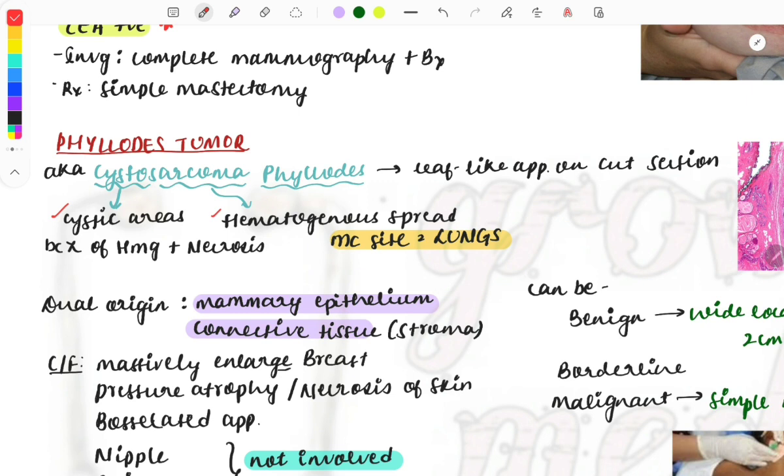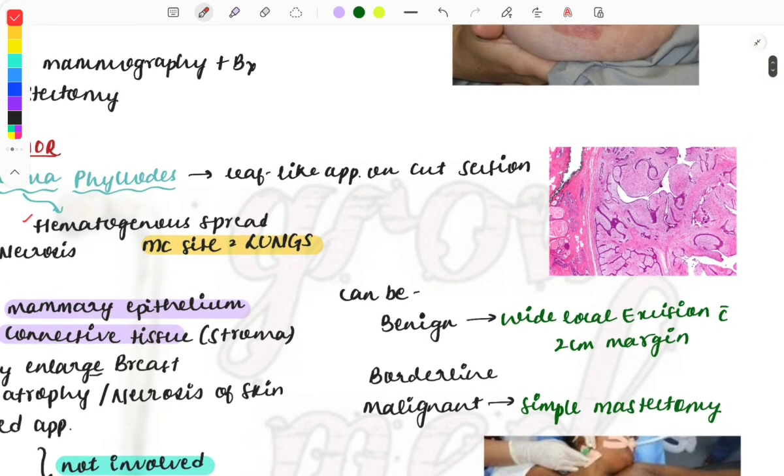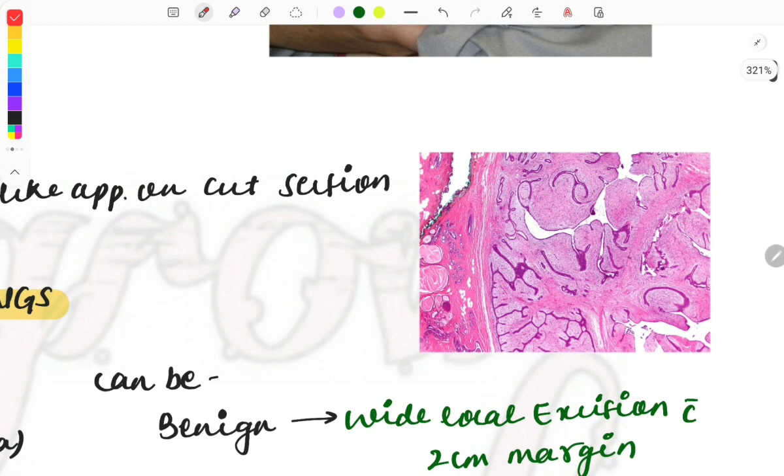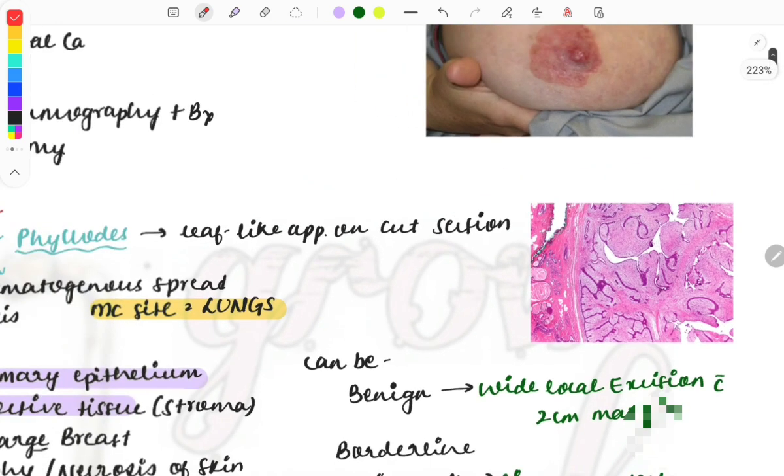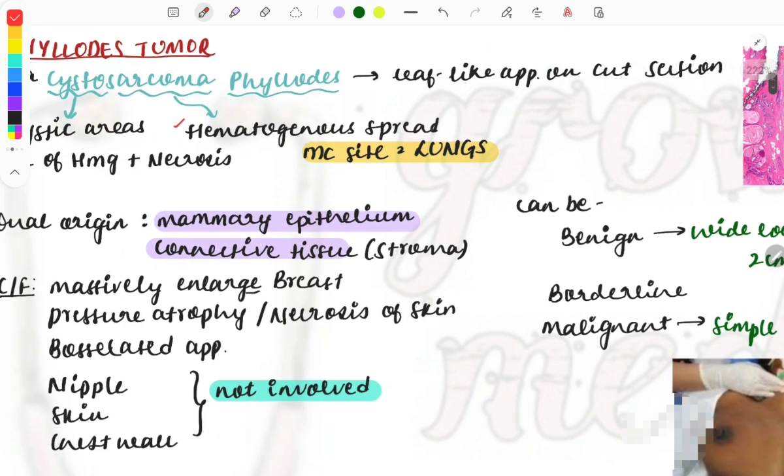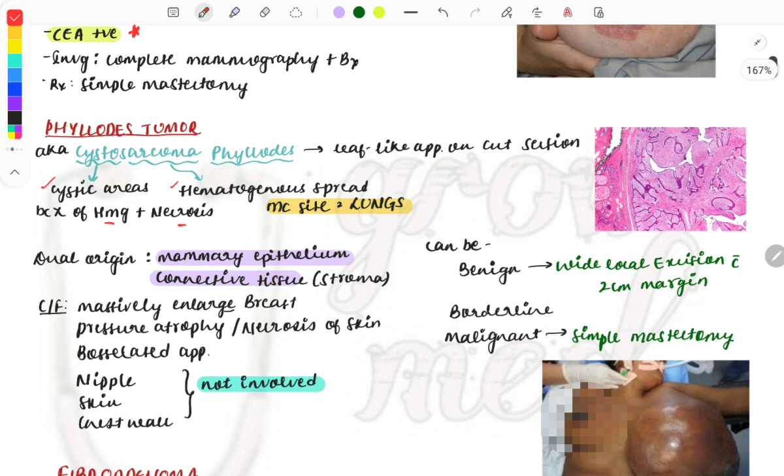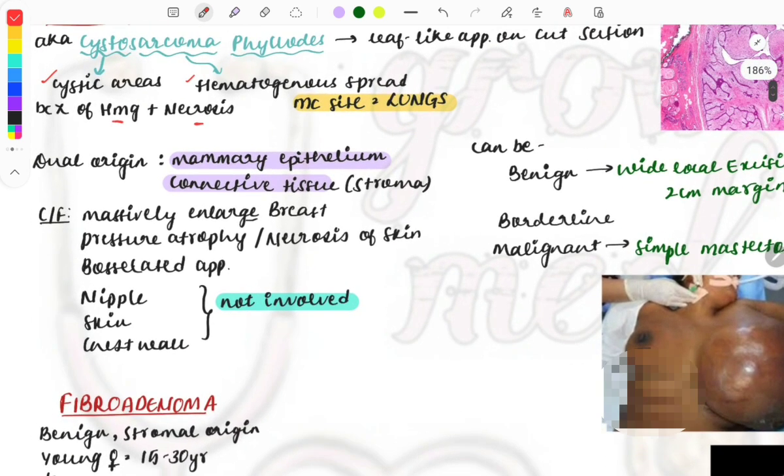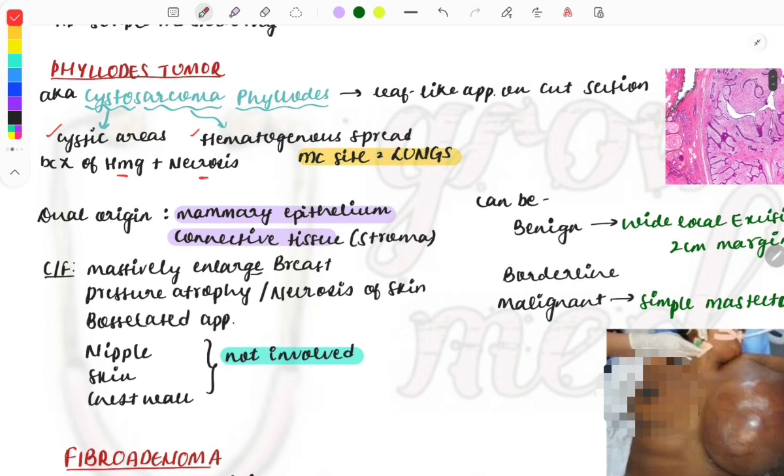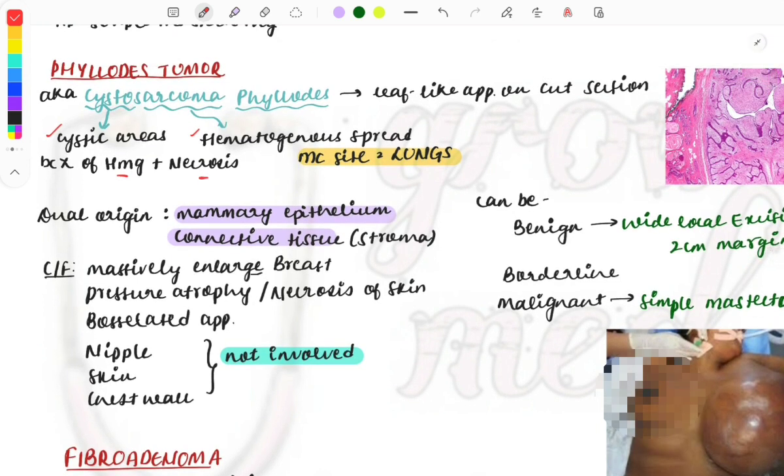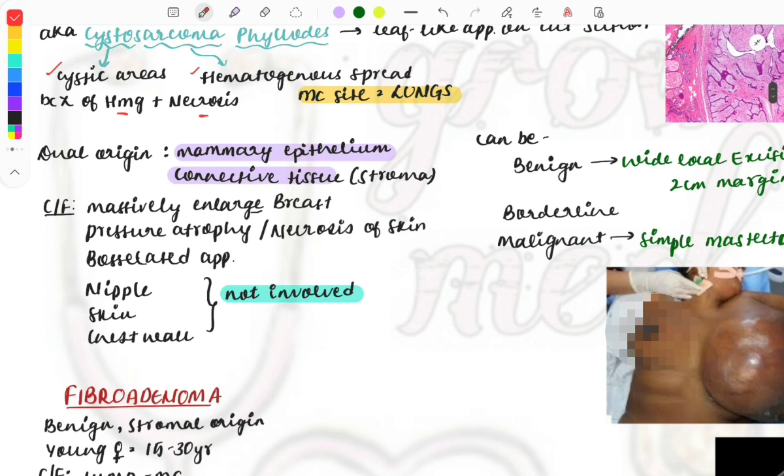Phylloides means leaf-like appearance on cut section. You can see here a cut section with multiple protrusions and leaf-like structures. This can be given as an image. These cystic areas are present because of hemorrhage and necrosis. Hematogenous spread most commonly goes to the lungs. It has dual origin: mammary epithelium and connective tissue.